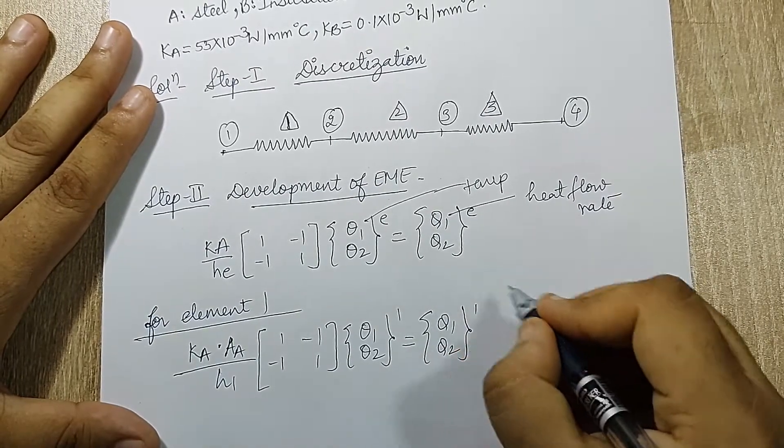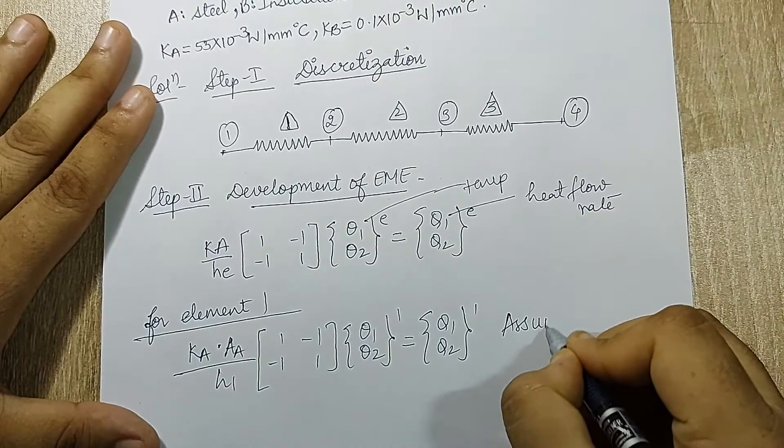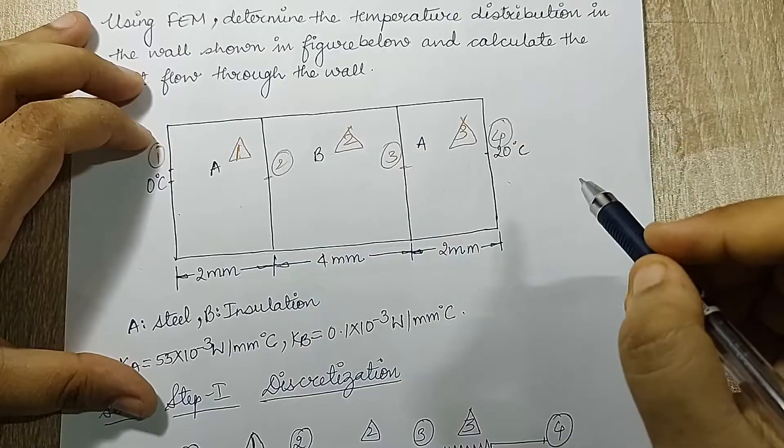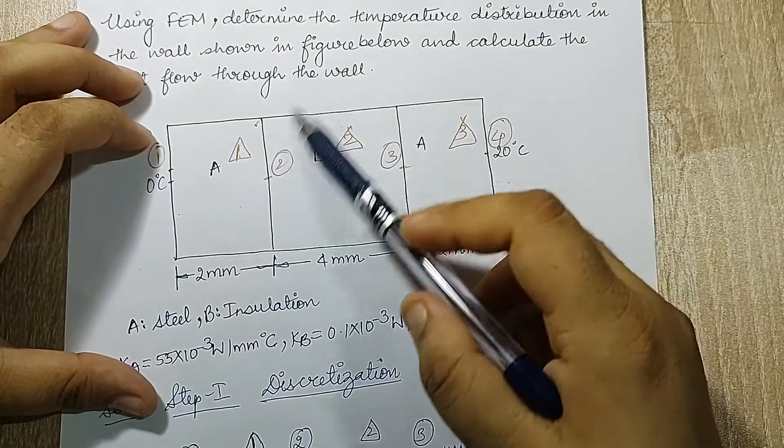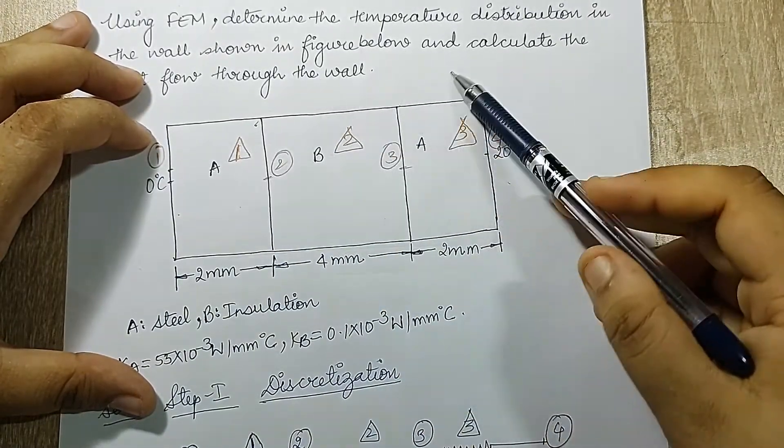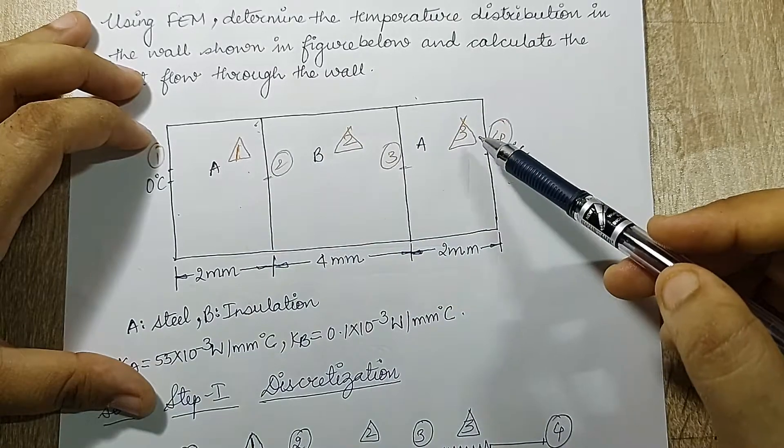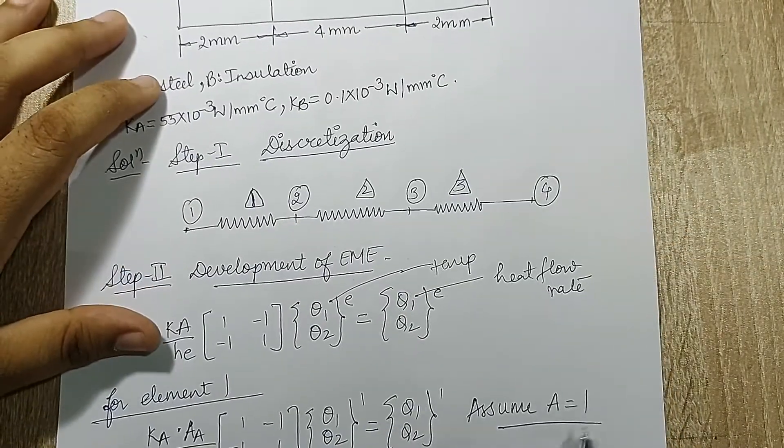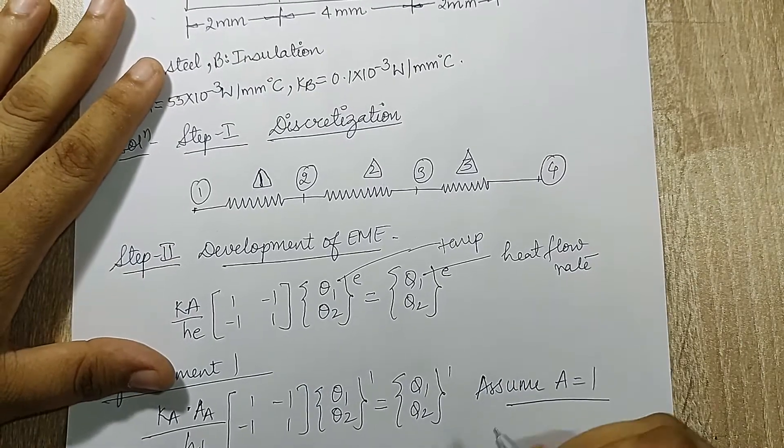Now here I will do a small assumption that my value of area is 1. From Fourier's law you must be knowing that this cross-section area is going to be same for all the walls, but this thickness is what is going to vary. So I am just writing area is 1.